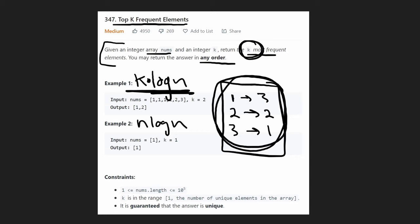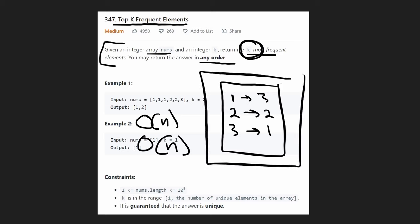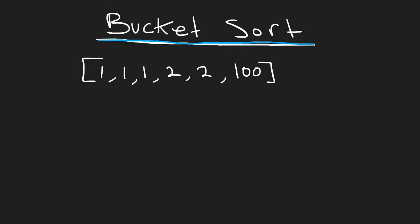It turns out there's an even better solution that can be done in O(n) linear time with O(n) memory. We're still going to use the technique of counting the number of occurrences of each value. This problem can actually be solved in linear time using an algorithm called bucket sort.